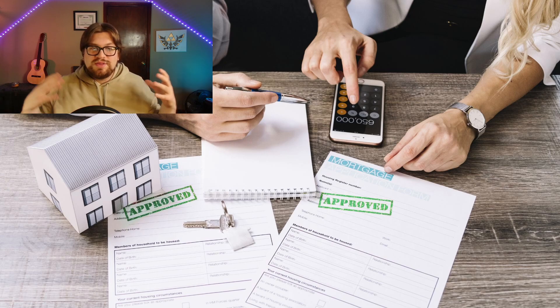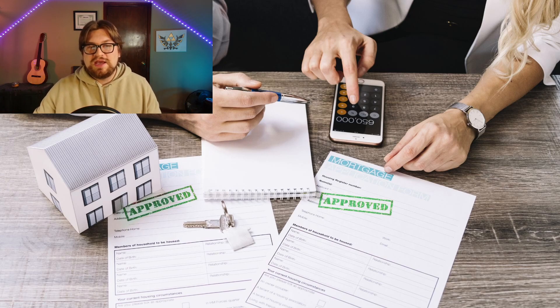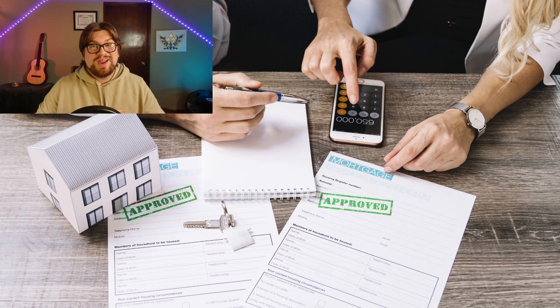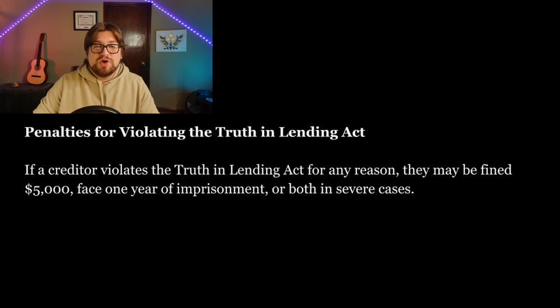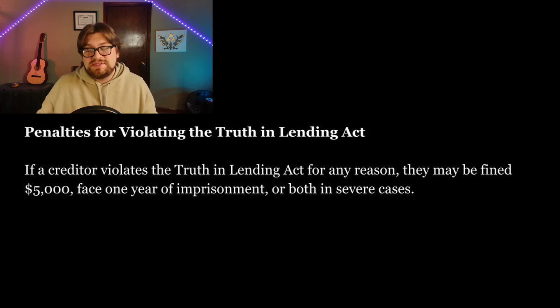So what are the penalties for violating the Truth in Lending Act? If a creditor violates the Truth in Lending Act for any reason, they may be fined $5,000 or even face one year of imprisonment, or both in severe cases.